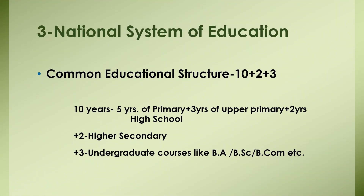NPE 1986 suggests recommendations for a national system of education, which implies that up to a given level, all students irrespective of caste, creed, location or sex should have access to education. A common educational structure of 10+2+3 is recommended, which was originally recommended by the Kothari Commission 1964-1966. The first 10 years include 5 years of primary, 3 years of upper primary, plus 2 years of high school. Plus 2 indicates higher secondary level, and plus 3 refers to undergraduate courses like BA, BSc, BCom, etc.